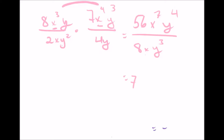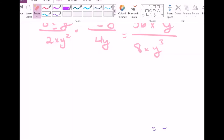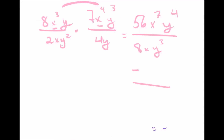x to the seventh on top, x on the bottom — we're left with x to the sixth on top, because 7 minus 1 is 6 and that's positive. Then y to the fourth over y cubed leaves us with y to the first on top. In this situation, there's actually no denominator anymore — everything happened to be in the numerator. But if there were more y's on the bottom than the top, you'd be left with some y's in the denominator. The answer is 7x to the sixth y.